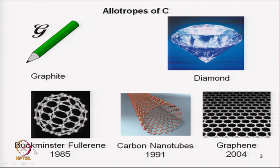But since 1980s newer forms of carbon have been discovered. Buckminster Fullerene was discovered in 1985, then carbon nanotube in 1991 and graphene in 2004. One of the latest forms of carbon which was discovered is graphene in 2004. And we will begin our journey with the structure of graphene.